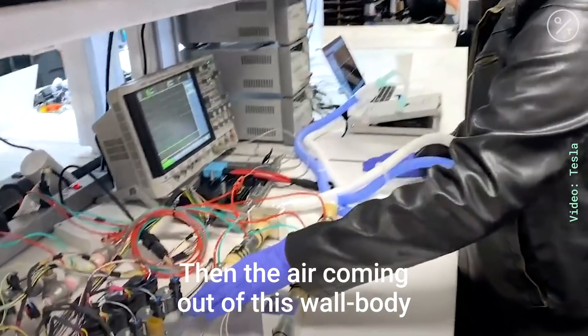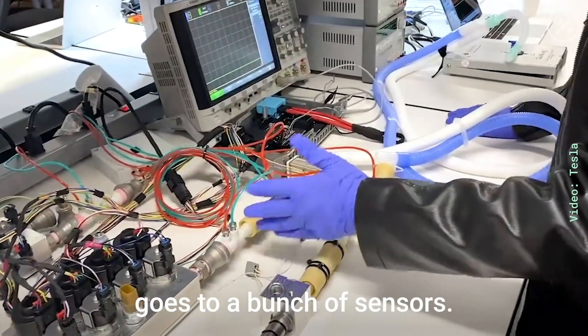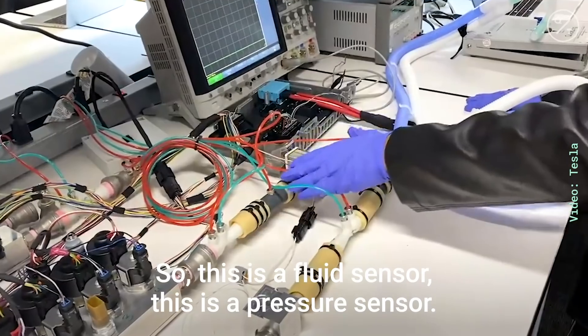Then the air coming out of this wall body goes to a bunch of sensors. So this is a flow rate sensor, this is a pressure sensor.